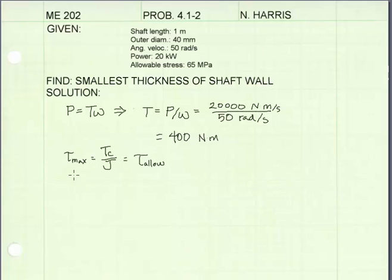Our equation for maximum shear stress in a shaft is equal to internal torque T times the radius C divided by polar moment of inertia J. We can set this equal to our allowable shear stress because the maximum shear stress in the shaft will not be allowed to exceed the allowable stress.